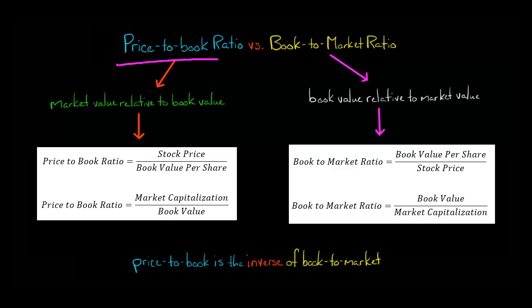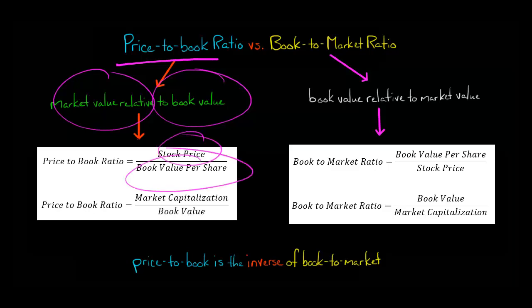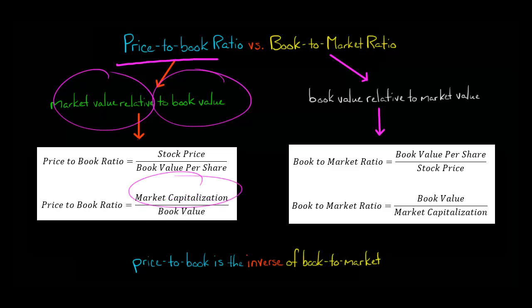A company's price-to-book ratio tells you its market value relative to its book value. For example, you could take a company's stock price, divide it by the book value per share, and that will tell you the price-to-book ratio. Alternatively, you could take the market cap and divide it by the total book value.